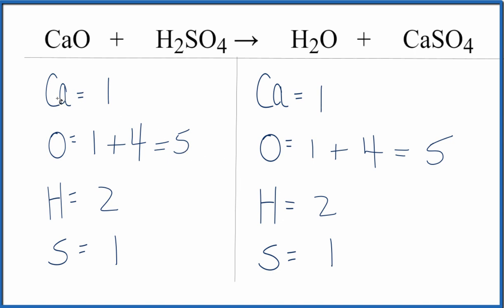If you were asked to report the coefficients, you could just say 1, 1, 1, 1 to show that it's balanced, but we don't write those.